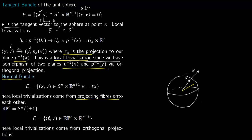For the local trivialization of the normal bundle: pick a neighborhood in the same way as before — draw a plane through the center perpendicular to X, intersect with the sphere to get U(X), then pick a point Y in that neighborhood. To show P^{-1}(X) and P^{-1}(Y) are linked, note the projection map again goes from E to S^n, same as before. For Y you have the vector t·Y, and you prove the fibers are isomorphic via orthogonal projection.